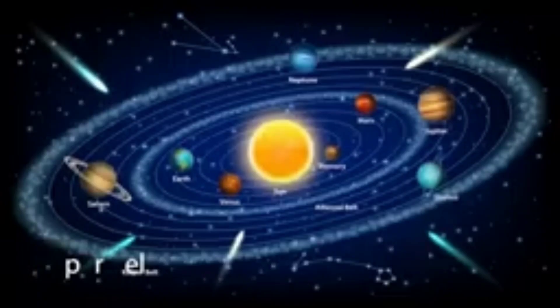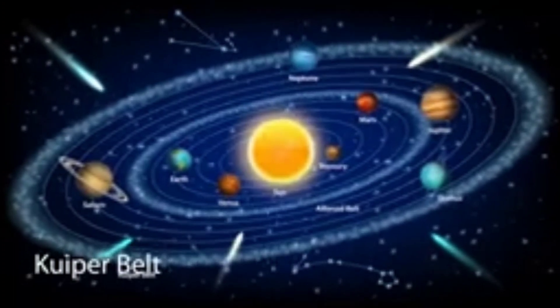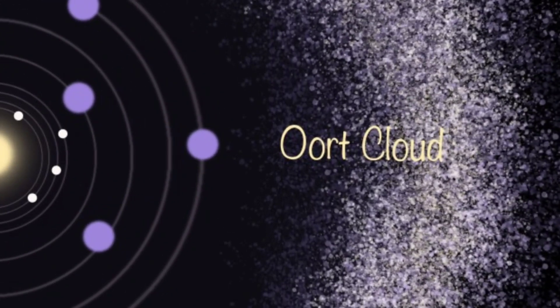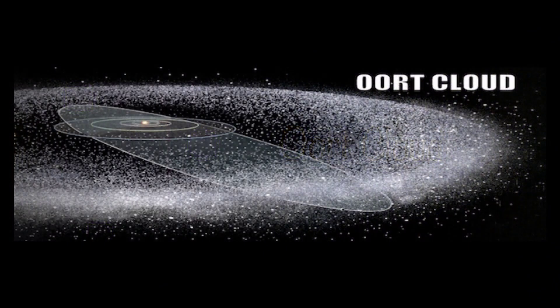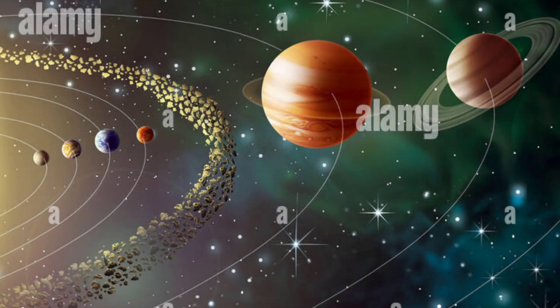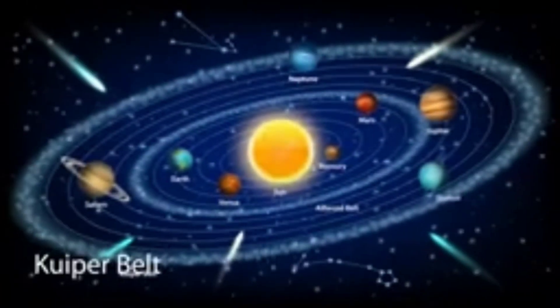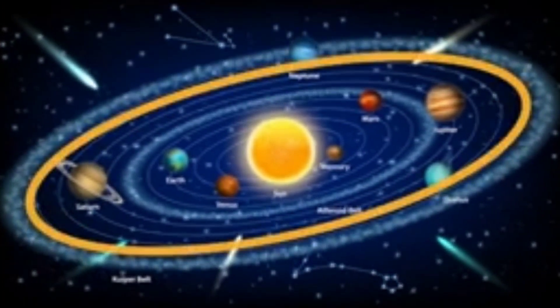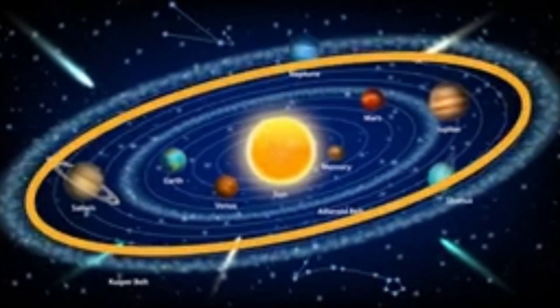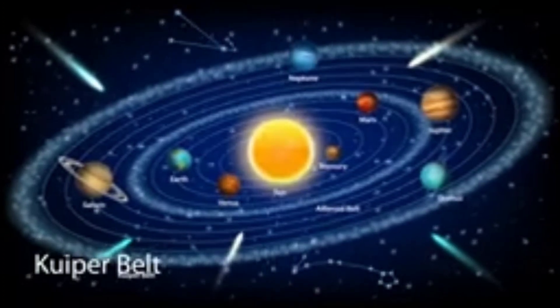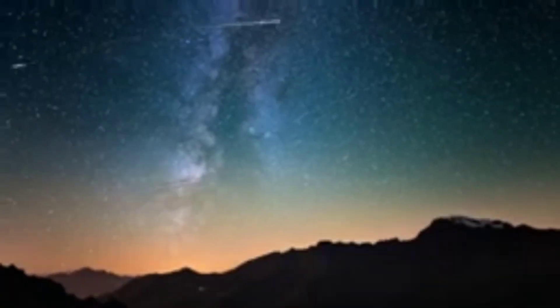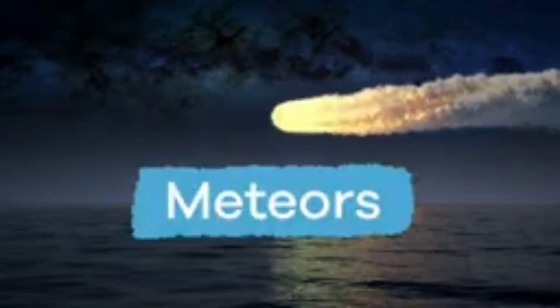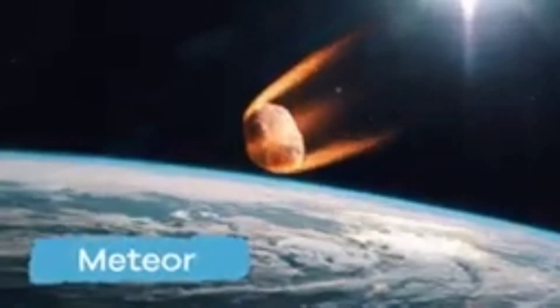Comets originate from the Oort Cloud and the Kuiper Belt. The Oort Cloud is a spherical cloud of comets and other icy bodies that surrounds the solar system. The Kuiper Belt is a belt composed of comets, minor planets, and other bodies located beyond the orbit of Neptune. Another member of the solar system is the meteor.